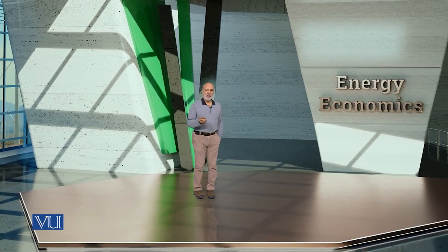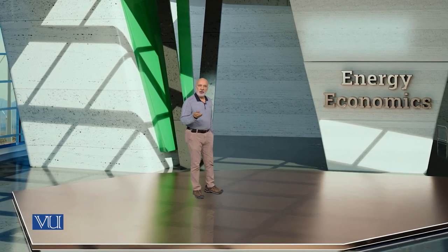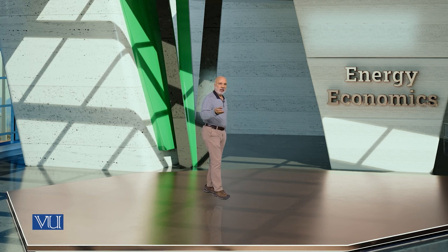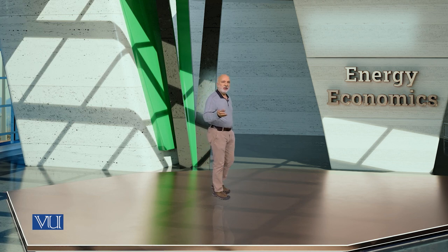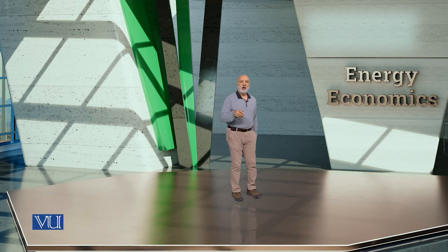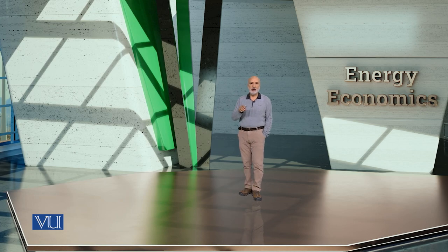Acid rain means that it is acidic. Acidity is measured by pH value. If the pH value is lower than 7, it is acidic — for example, pH 5 to 6.